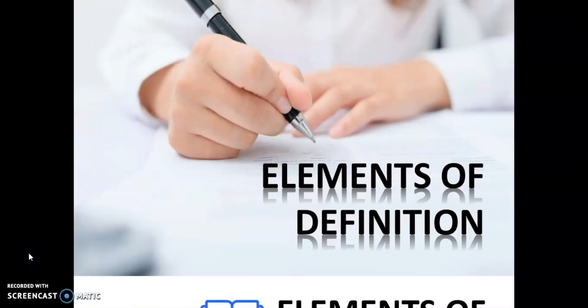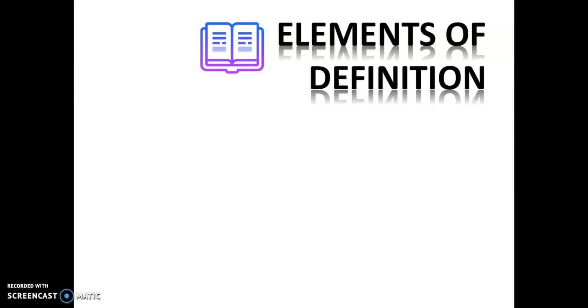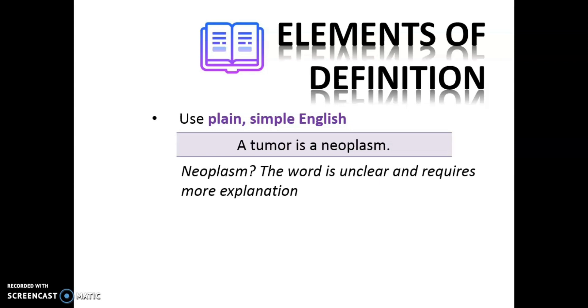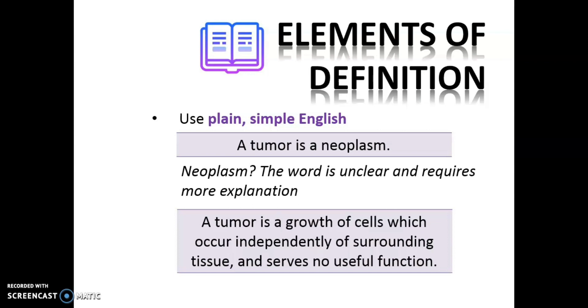Next, elements of definition. If you want to produce a short formal definition, these are the elements that you need to consider. First, use plain, simple English. Let's say you want to define what is the meaning of tumor. You write it as, a tumor is a neoplasm. There is nothing wrong about it. However, the word neoplasm itself, it is unclear. It requires more explanation, especially for those who did not have any background knowledge about it. They have no idea what is neoplasm. Instead of using a bombastic word to define a tumor, you can always use plain, simple English. By defining it as, a tumor is a growth of cells which occur independently of surrounding tissue and serves no useful function. There it goes. This definition is clearer as it gives an accurate description of the word tumor.